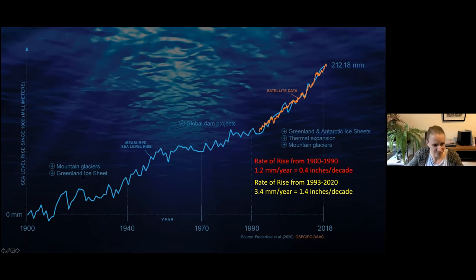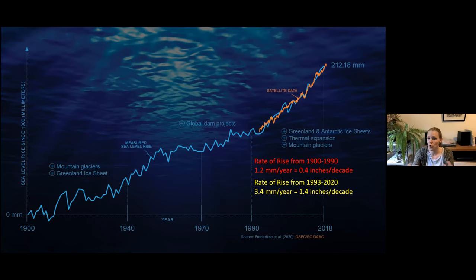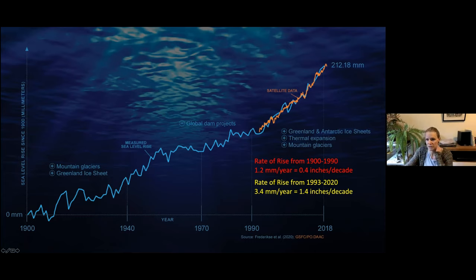You also see on this graph the main drivers for sea level change over these time periods. In the early 20th century, the main drivers come from mountain glaciers melting and some component of the Greenland ice sheet melting, but neither is too big. This period of slowdown in sea level rise is related to the damming of water on land — a slowdown associated with major dam projects. Now, the fast acceleration over the last couple of decades has two big components: thermal expansion of the oceans contributing significantly, and the Antarctic ice sheet starting to contribute significant amounts to sea level rise.